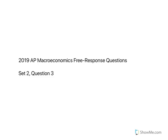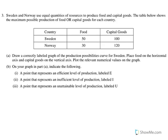Hey guys, it's Mr. Schmidt here, and in this video I want to go over question three from set two of the 2019 AP Macroeconomics free response questions. This question really takes us back to basics, which is the production possibilities curve and comparative advantage.